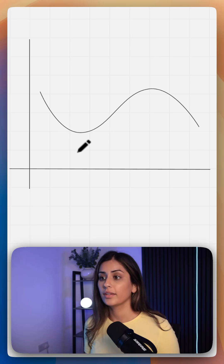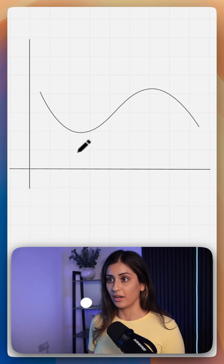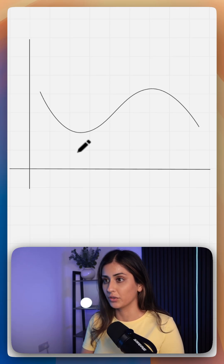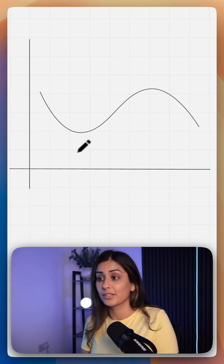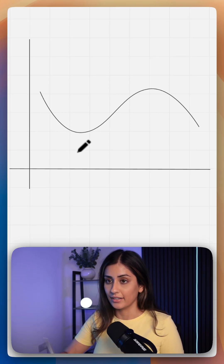You know that dy by dx is your gradient of your curve. It tells you your rate of change of your curve. Your d squared y by dx squared is the rate of change of your gradient.